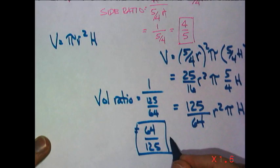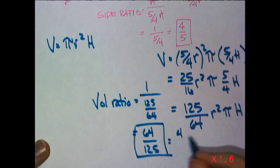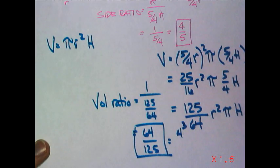that 64, that can be rewritten as, that's 4 cubed. 4 times 4 times 4. 125 is nothing more than 5 cubed.